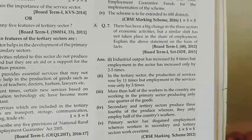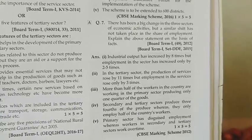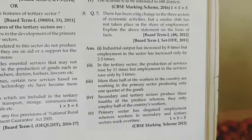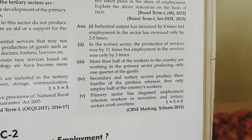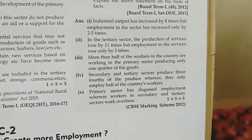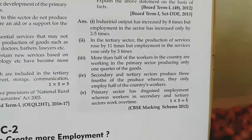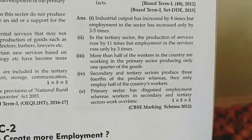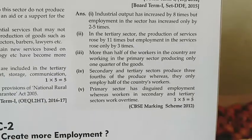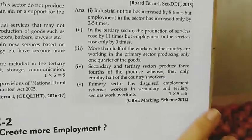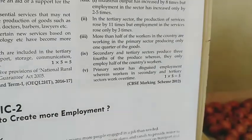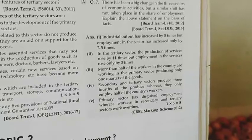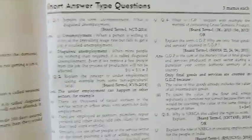Then: there has been a big change in the three sectors, but a similar shift has not taken place in the share of employment — explain the statement on the basis of facts. Here you have to give facts, like industrial output has increased many times but employment has only increased 2 to 2.5 times. Similarly, production has grown but employment has not kept pace. More than half of the workers in the primary sector produce only one quarter of the goods; secondary and tertiary sector workers produce three-quarters of output, but still employment there is less. Primary sector has a lot of disguised unemployment. So this is enough for today — remaining topics we will see tomorrow, thank you.